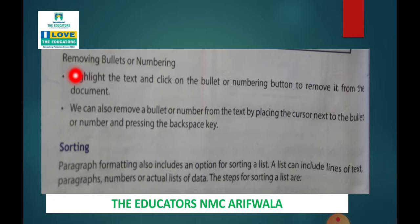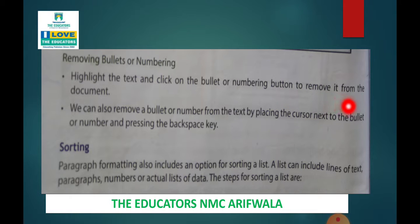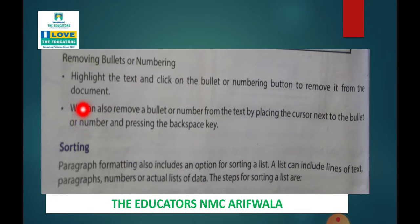Ismae humarhe paas topic hai removing bullet or numbering. Bullets or number ko remove kis tarah se kertate hai? Highlight the text and click on the bullet or numbering. Aapna text joh MS Word ke andara apne write kiya hai usko highlight kijaye and click on the bullet or numbering button pey click karenge to remove it from the document.